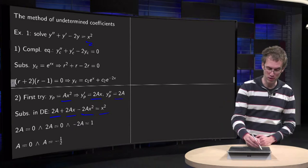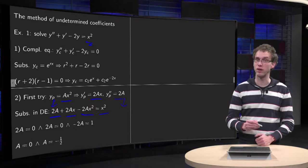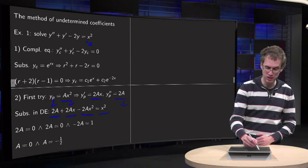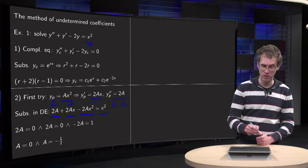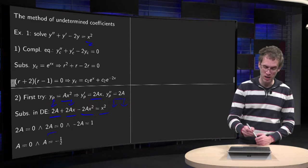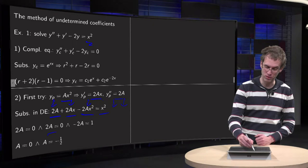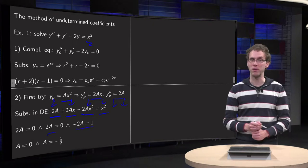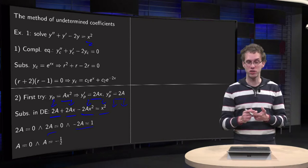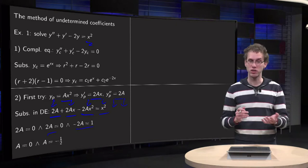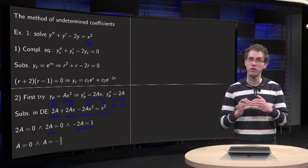The coefficient in front of the constant term on the left is 2a, and on the right it is 0, so 2a = 0. The coefficient in front of x on the left is 2a, and on the right it is 0, so 2a = 0 again. The coefficient in front of x² on the left is -2a, and on the right it is 1, so -2a = 1. Our conditions give a = 0 and a = -1/2, which is not possible, so there is no solution.